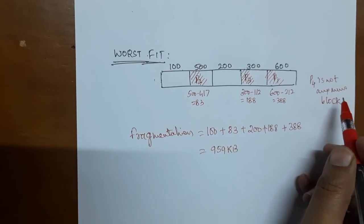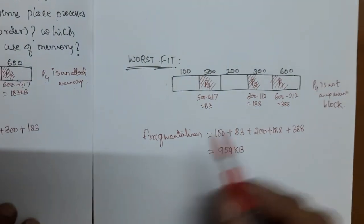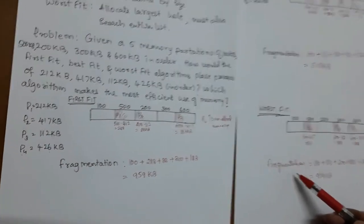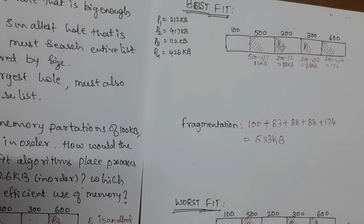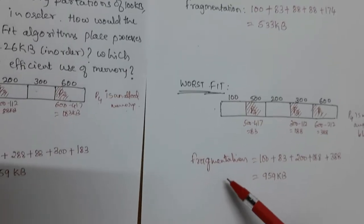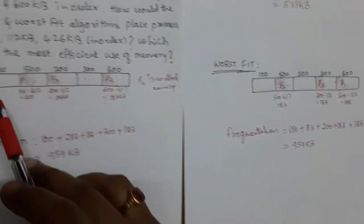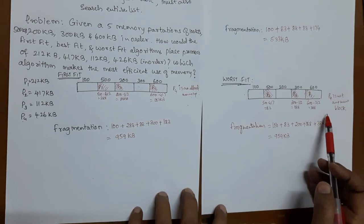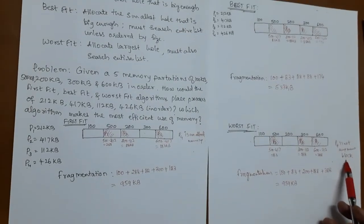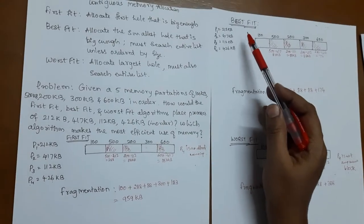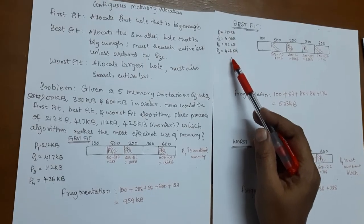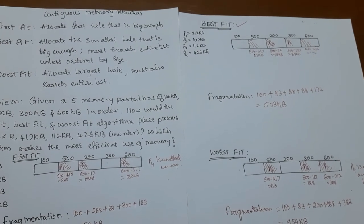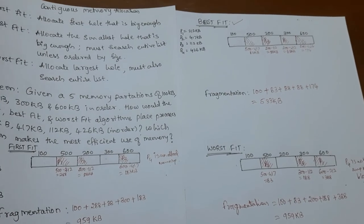So when we compare the three methods — first fit, best fit, and worst fit — we see that first fit and worst fit both say P4 is not allocated with memory, whereas best fit allocates memory to all four incoming processes. We can conclude that the best fit method is the best method for contiguous memory allocation for this given problem.